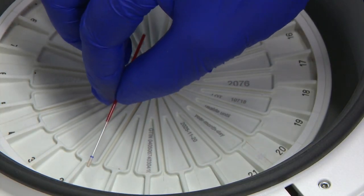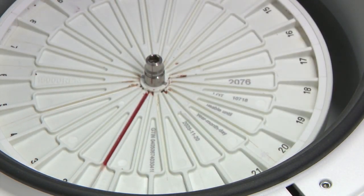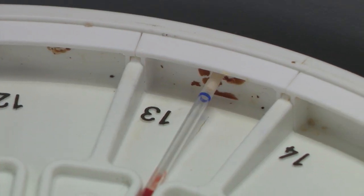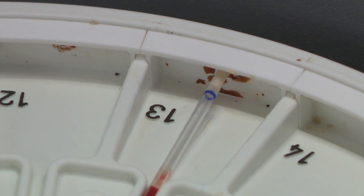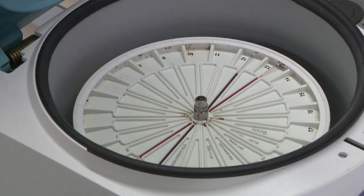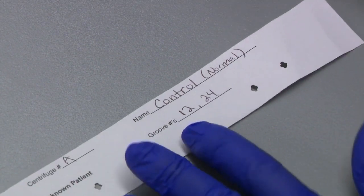Place the patient and control micro hematocrit tubes in the centrifuge with the clay plug facing out by first tucking the clay end under the rubber lip of the outer edge. Make sure the clay end is against the rubber wall in the groove. Make sure you balance each micro hematocrit tube. Record the centrifuge number and groove numbers used for each micro hematocrit tube on the sheet.